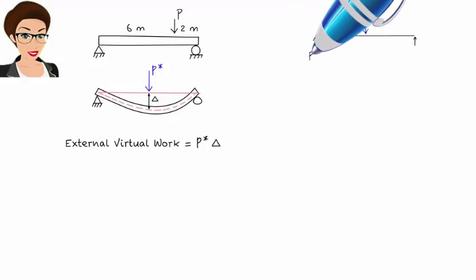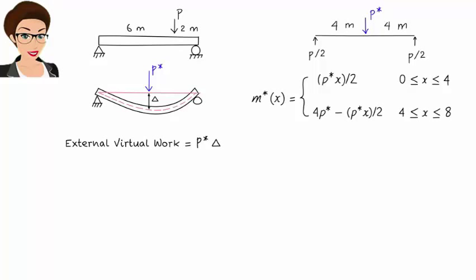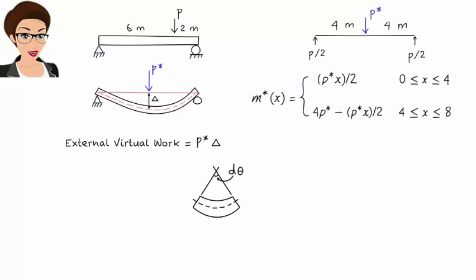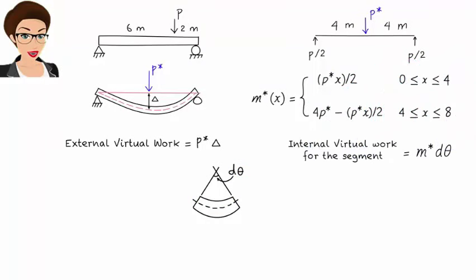Here, the virtual load is placed at the midpoint of the beam. Therefore, the beam's virtual internal bending moment can be written as M star. Now we need to determine the internal deformation in the beam. To do so, let's examine a tiny segment of the deformed beam. Since the beam has been deformed under the real load, the segment also has a deformed shape. We can treat it as an arc length of a circle. The angle facing the arc length represents the internal deformation of the segment due to bending. So, internal virtual work in the segment can be written as M star d theta.